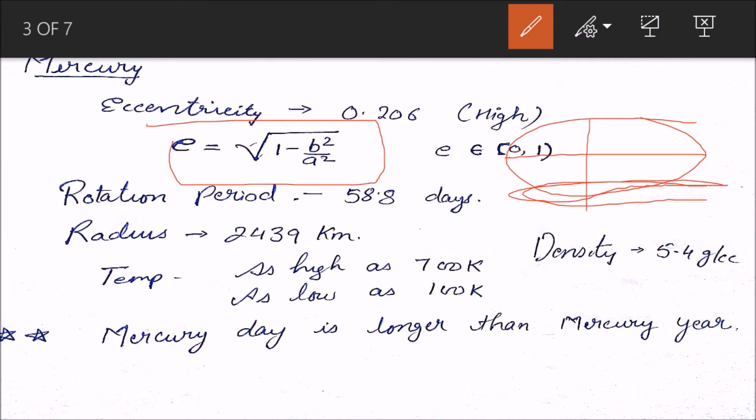The rotation period is 58.8 Earth days, so the days there are longer. The radius is 2,439 kilometers. The temperature is very high and can be very low, down to about 100 Kelvin. Density is about 5.4 grams per cc.